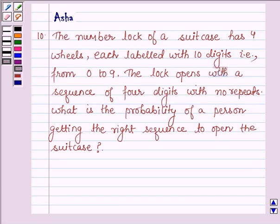Hello and welcome to the session. The given question says: the number lock of a suitcase has 4 wheels, each labeled with 10 digits, that is, from 0 to 9. The lock opens with a sequence of 4 digits with no repeats.